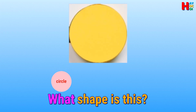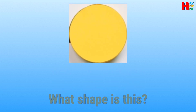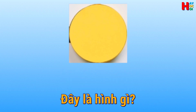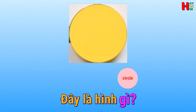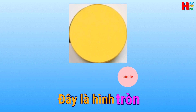What shape is this? This is a circle. Đây là hình gì? Đây là hình tròn.